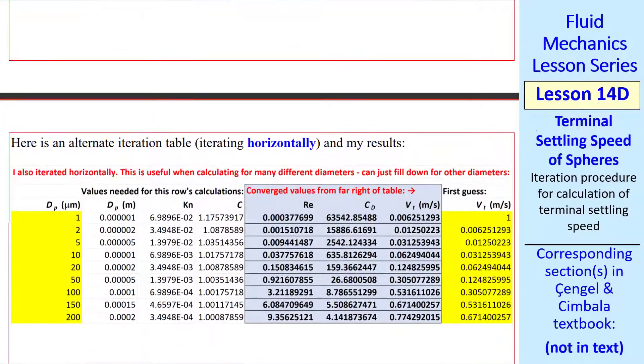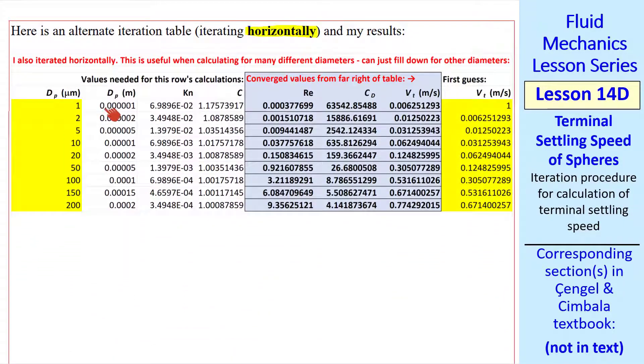In this example, I iterate vertically with a new guess in each new row. I just want to point out that an alternate way is to iterate horizontally, where I set up my diameter, Knudsen number, Cunningham correction factor. And here's my first guess for vt. To the right are my calculations of Reynolds number and cd. And I keep repeating that, Reynolds number cd, Reynolds number cd, vt, Reynolds number cd, vt, in columns to the right, which aren't visible on this page. These are the final converged values. What's nice about this horizontal method is that once you have this whole row set up, you can fill everything down and then put in different diameters. That way, for example, you can plot vt easily as a function of dp.